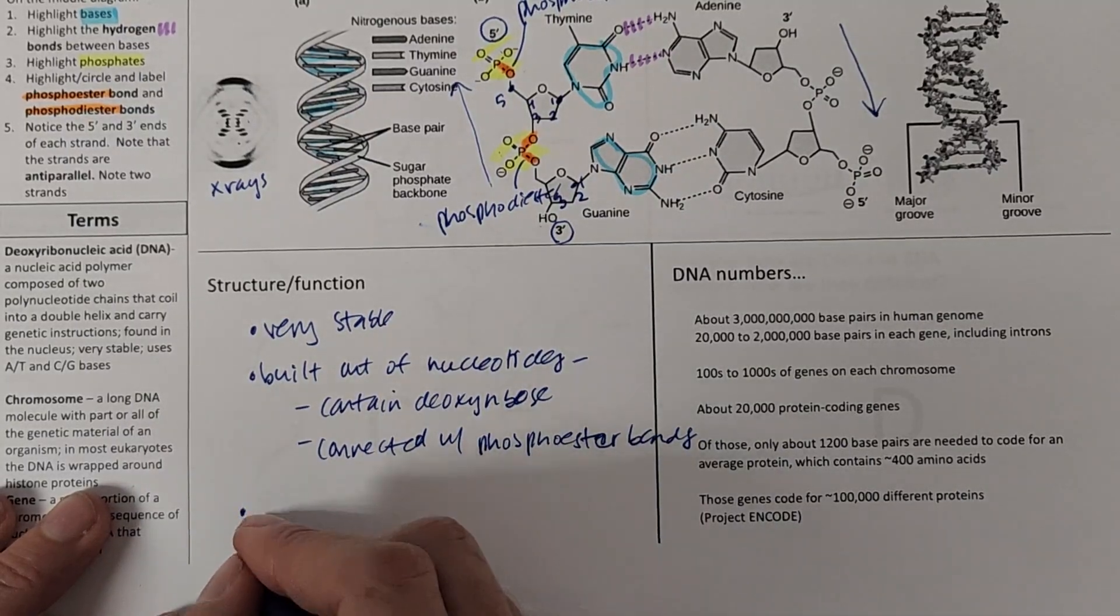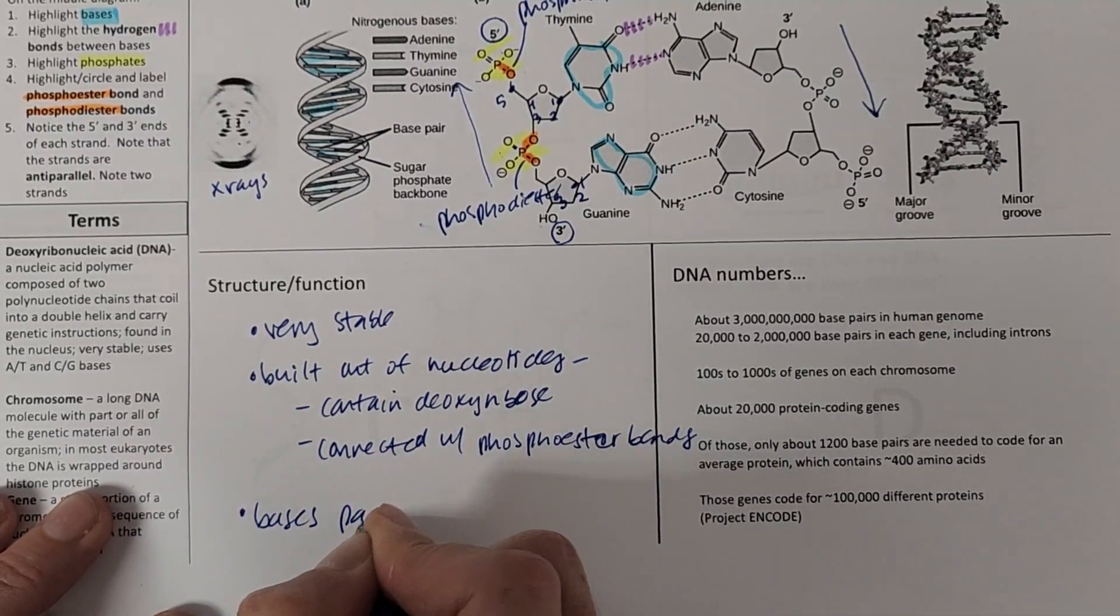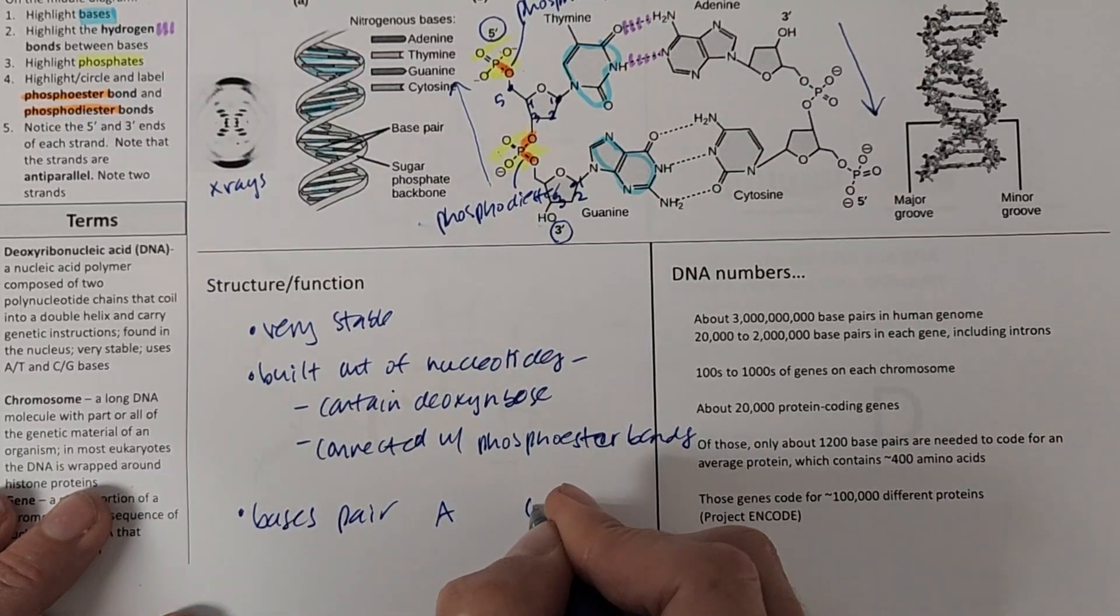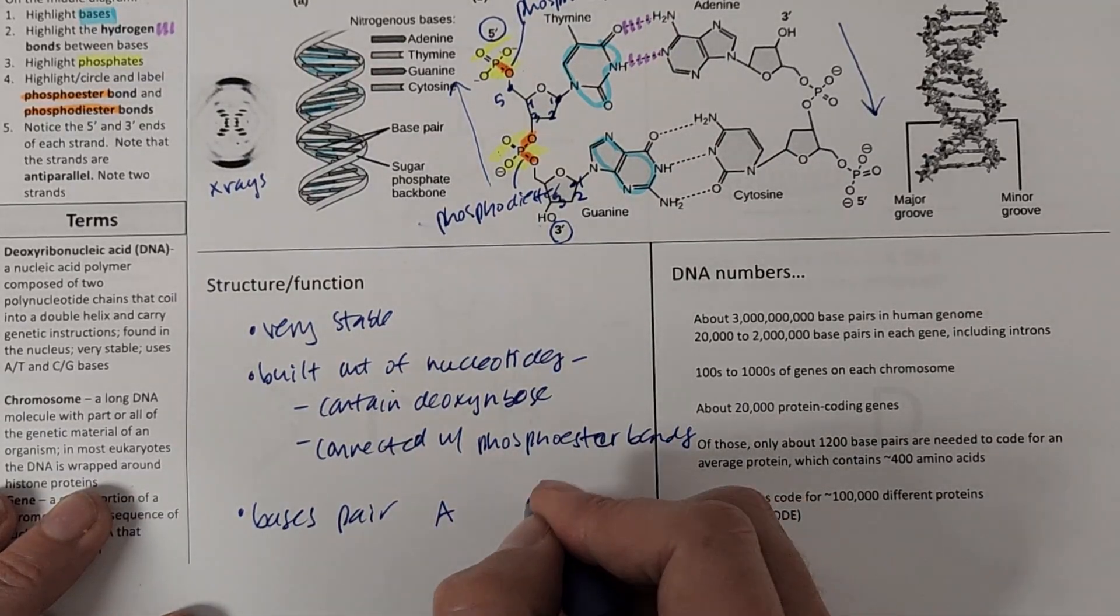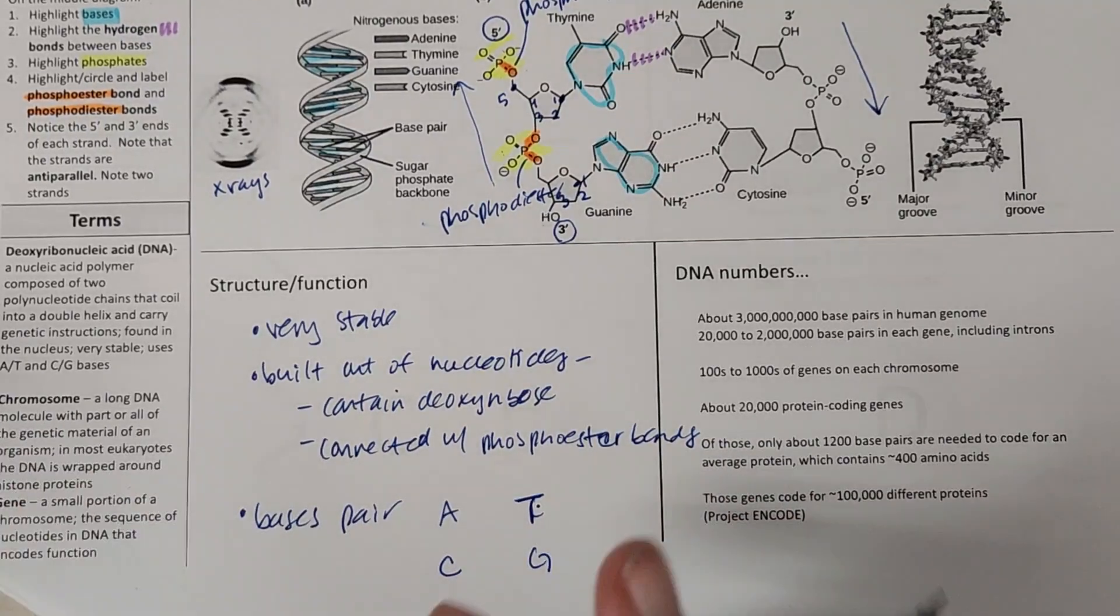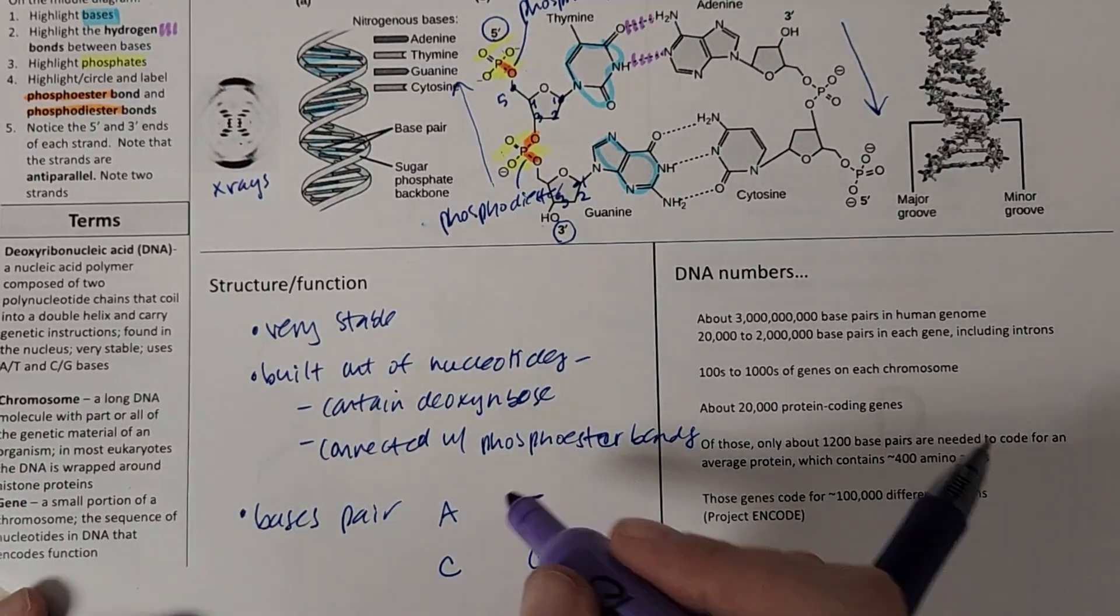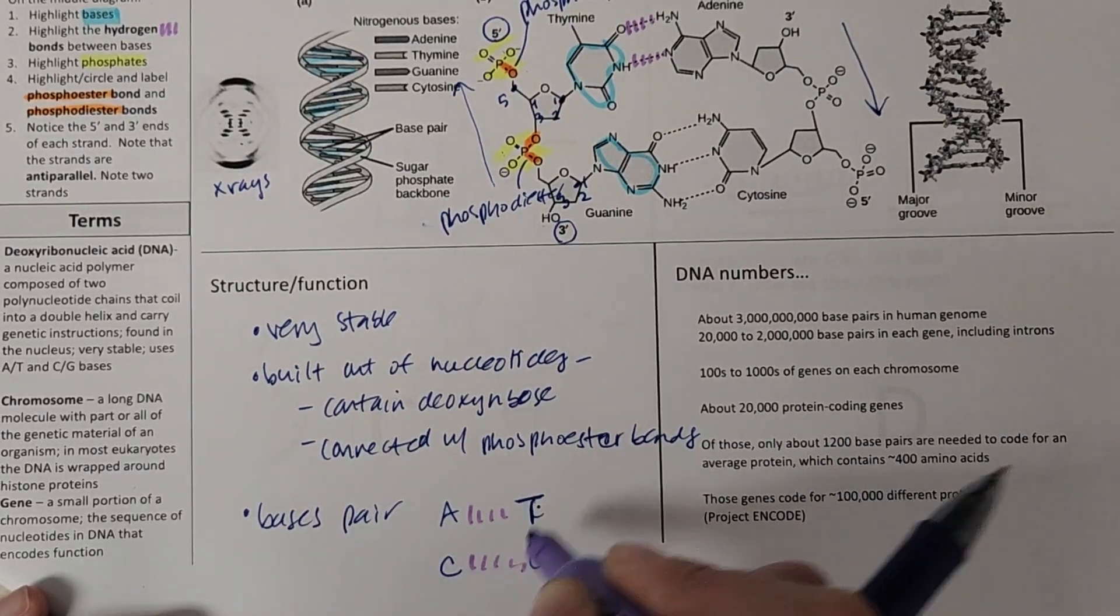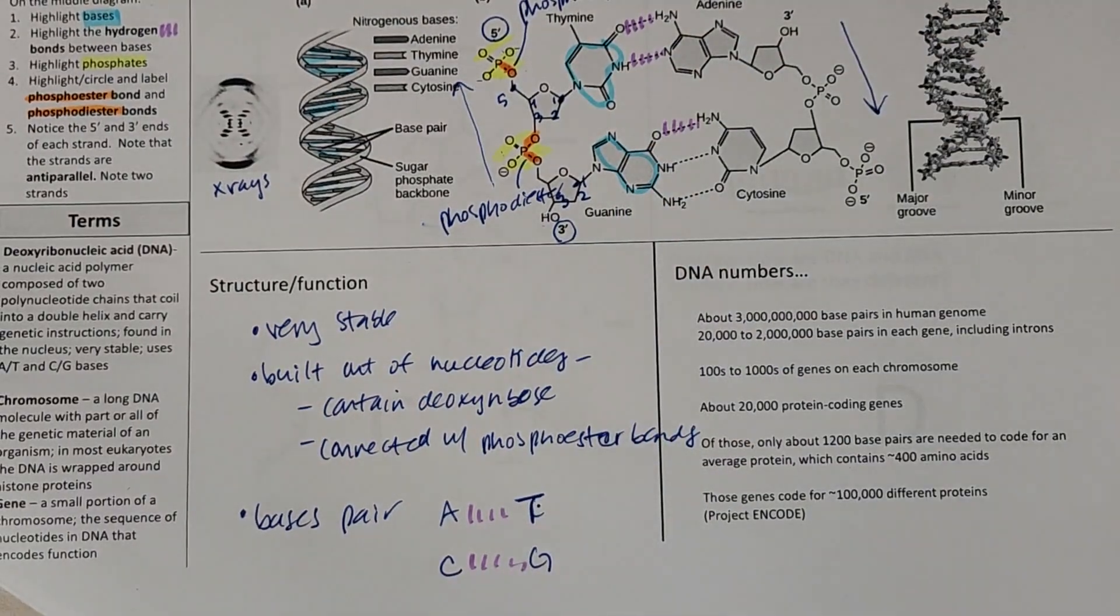They also are connected with those phosphoester bonds. The base pairs that we're going to see. So we're going to see base pairs. And we're going to see A pairs with T. And C pairs with G. And those are not bonded together. Those are hydrogen bonds. That was what we had seen here, right? Hydrogen bonds holding those bases together.